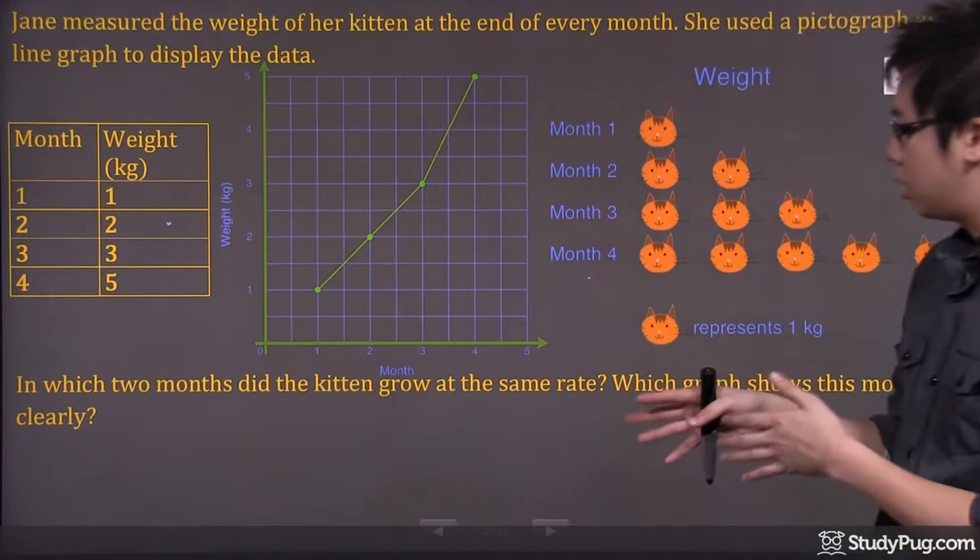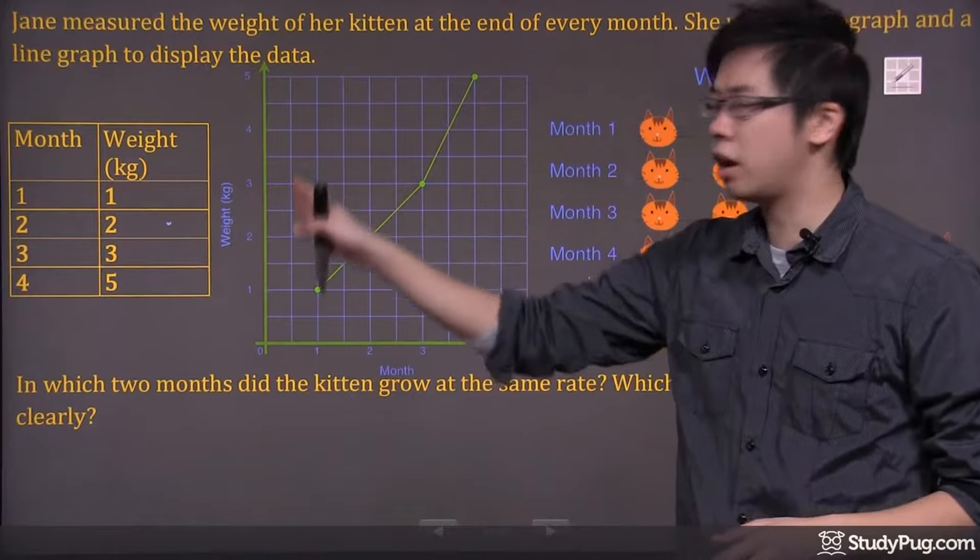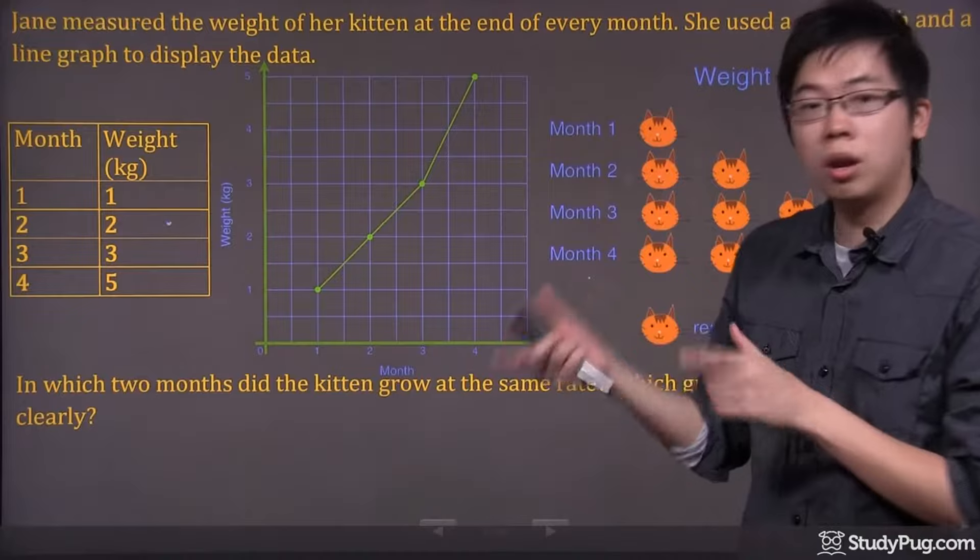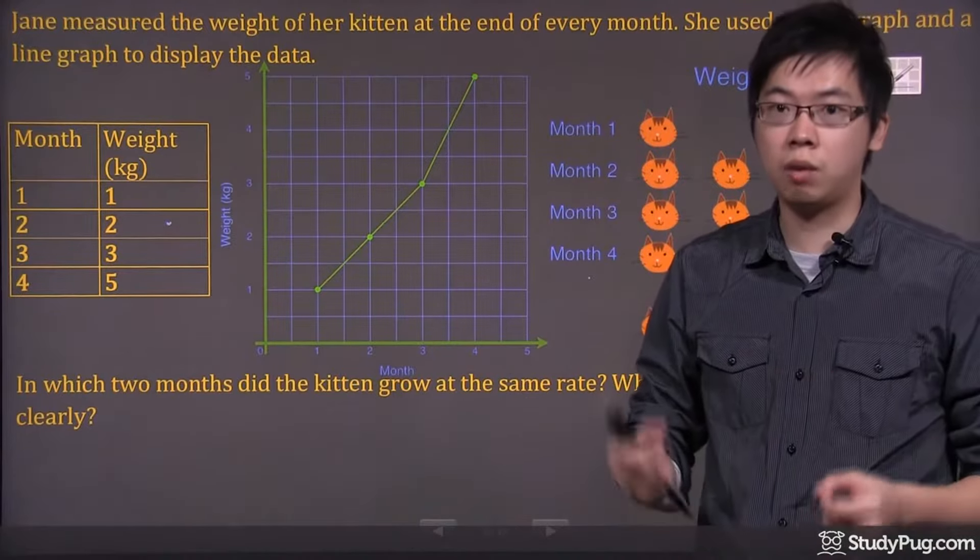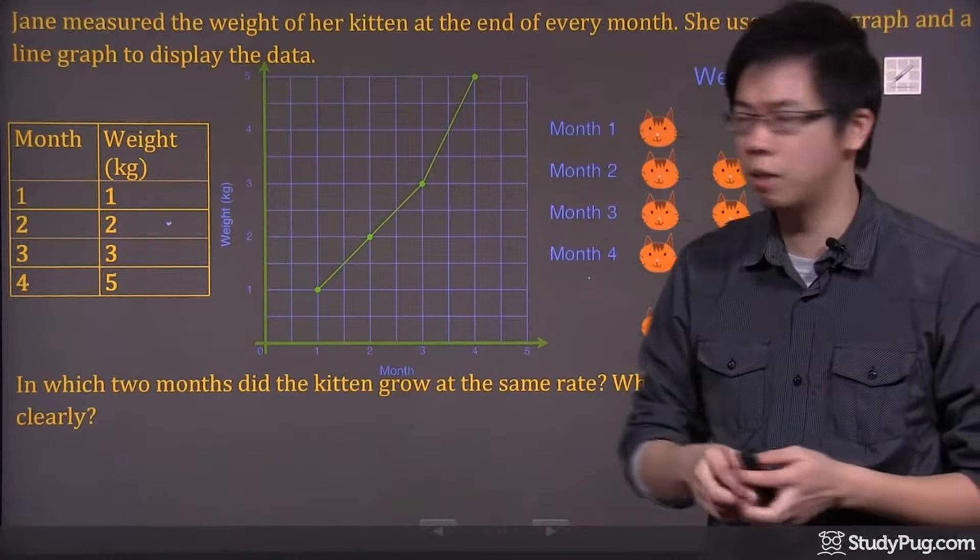In order for me to see the two months that had the same rate, if I'm looking at the line graph, I will be looking at the intervals where the two intervals will have the same slope. It's called a slope, or you can think of it as steepness.